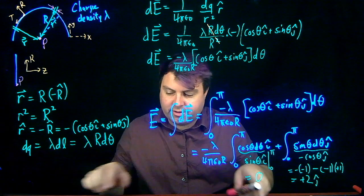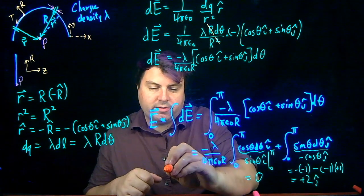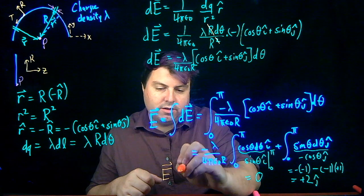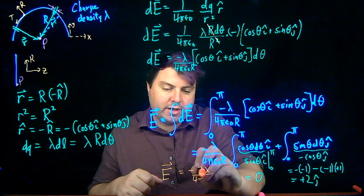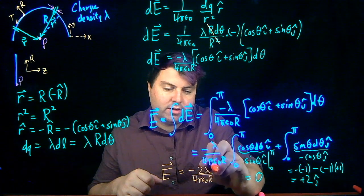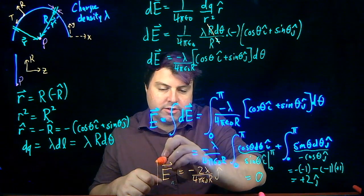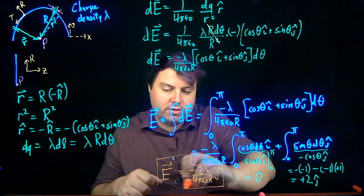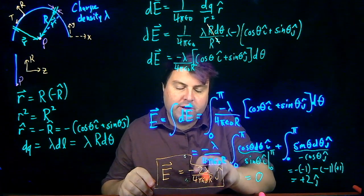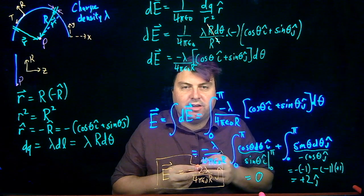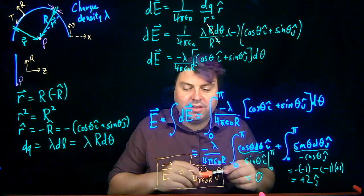So then my electric field at the end is going to be negative 2 lambda over 4π epsilon 0 r in the j hat direction. We can, of course, cancel the 2 and the 4, but very often we like the 4π epsilon 0 because we know that's 9 times 10 to the 9th. So that's how we solve this continuous piece. Thank you.